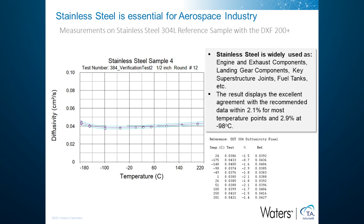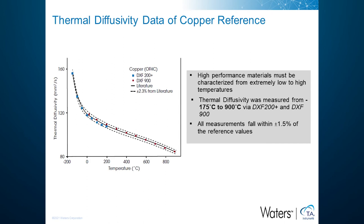We run a reference sample to verify the performance of any measurement instrument. The result for stainless steel 304L obtained with the DXF 200 Plus shows excellent agreement with reference data within 2.9% at all temperature points. Stainless steel is widely used as various components in aerospace and aeronautics industries. Measurements on a pure copper reference sample by both the DXF 200 Plus and DXF 900 show very good agreement with each other in the overlapping temperature range, and all measurements fall within 1.5% of reference values.